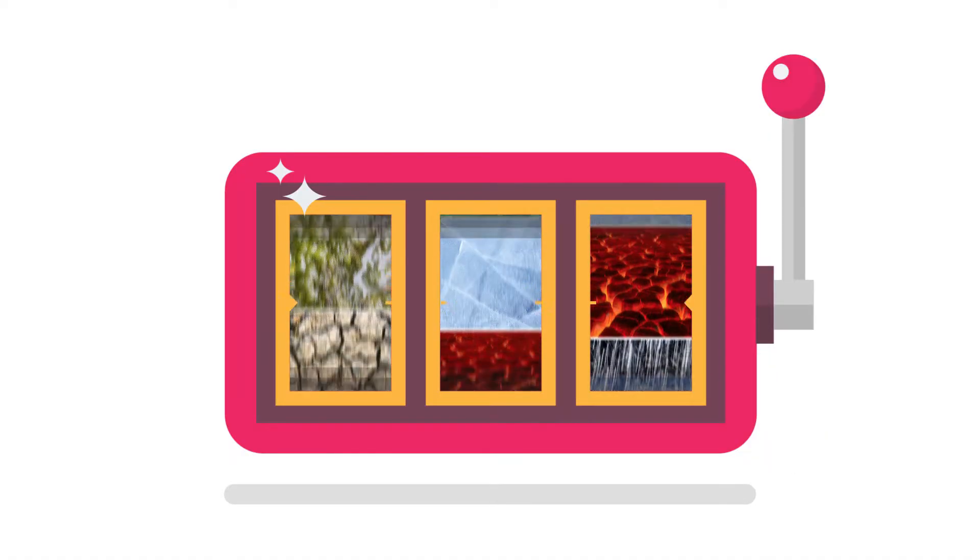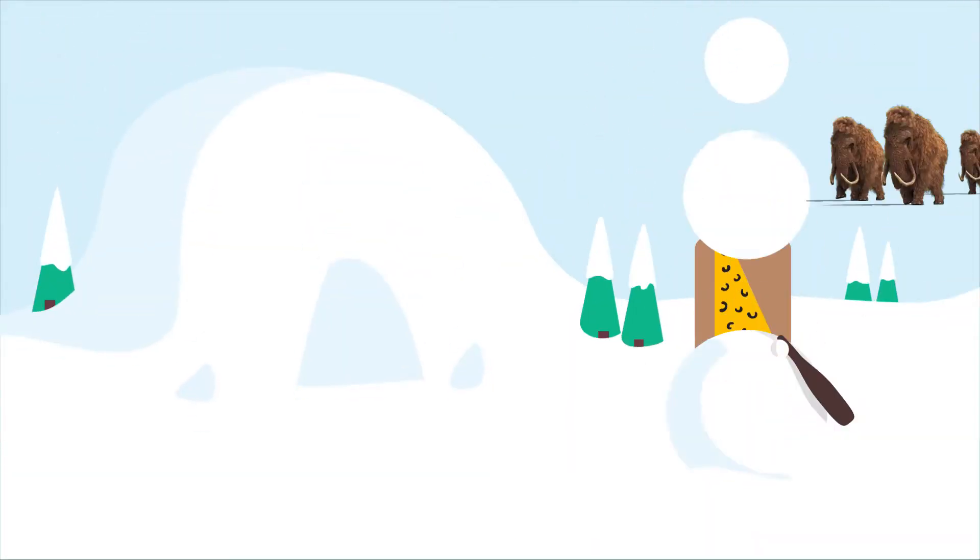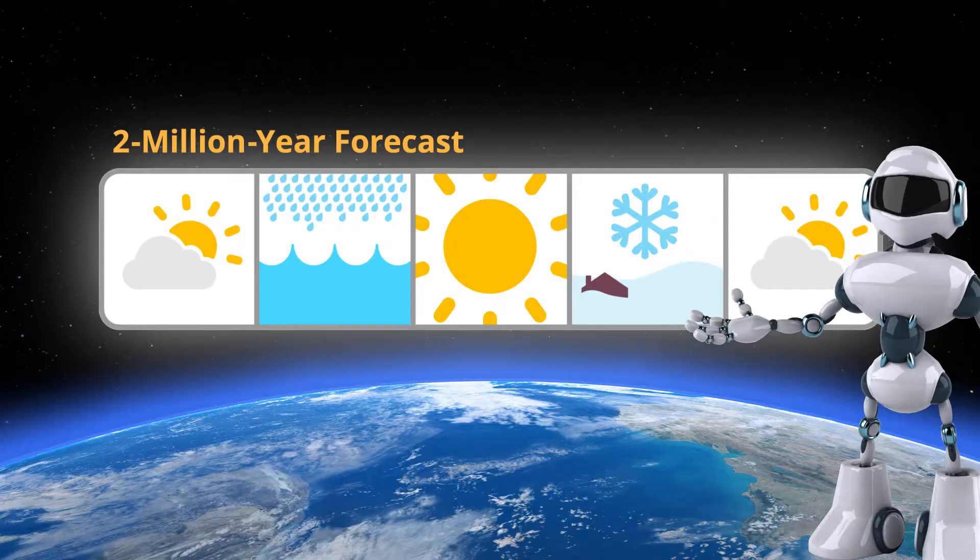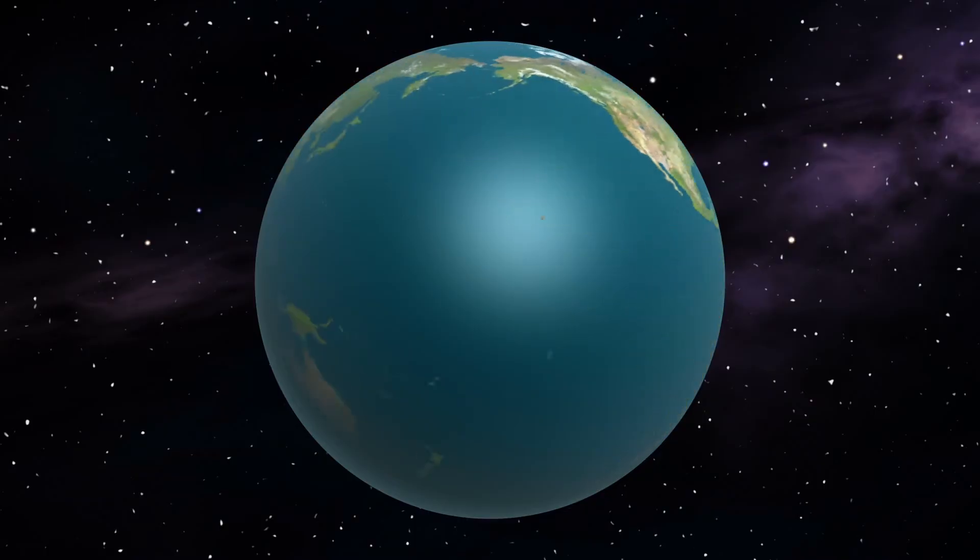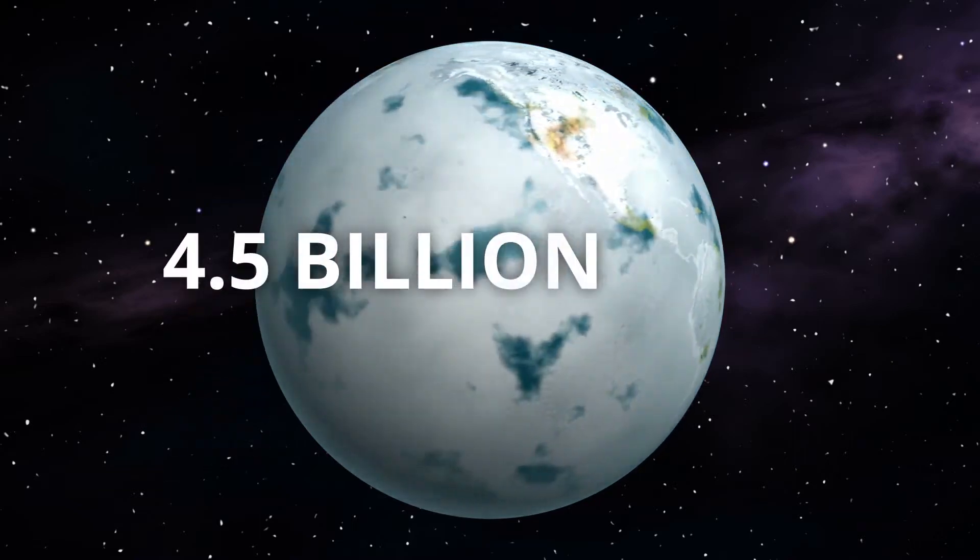In the interstellar climate lottery, it seems that we hit the Goldilocks jackpot. But that isn't to say our climate has been this way forever or will continue to stay this way. The Earth has undergone many changes to its climate in its 4.5 billion-year existence.